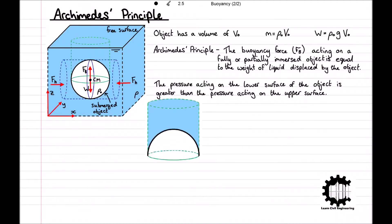Firstly, we will consider the volume of liquid directly above the object. The vertical pressure force Fu acting on the upper part of the object is equal to the weight of this volume directly above the object, and this weight acts vertically downwards through the centre of mass of the volume of liquid. Note that the direction of this force is in the negative z direction. Assuming that the density is constant throughout the liquid, the weight of this liquid is equal to ρgVu, with Vu denoting the volume of liquid between the surface of the liquid and the upper surface of the object. Therefore, the vertical pressure force acting on the upper part of the object, Fu, is equal to ρgVu.